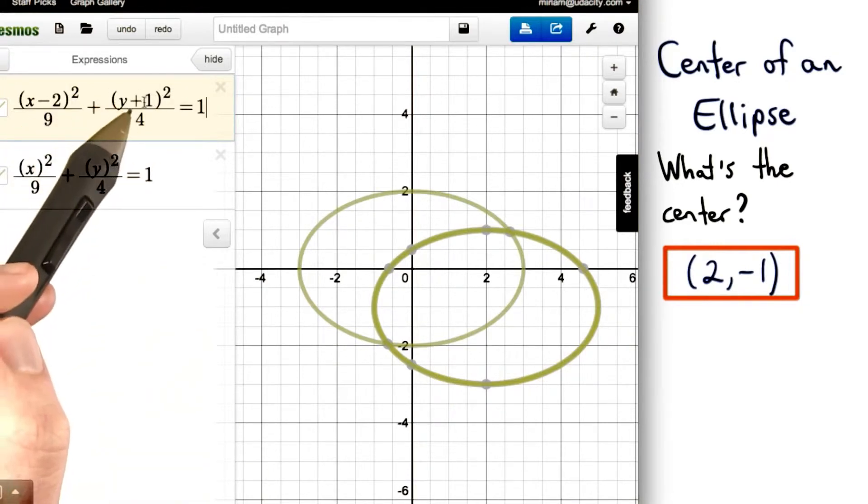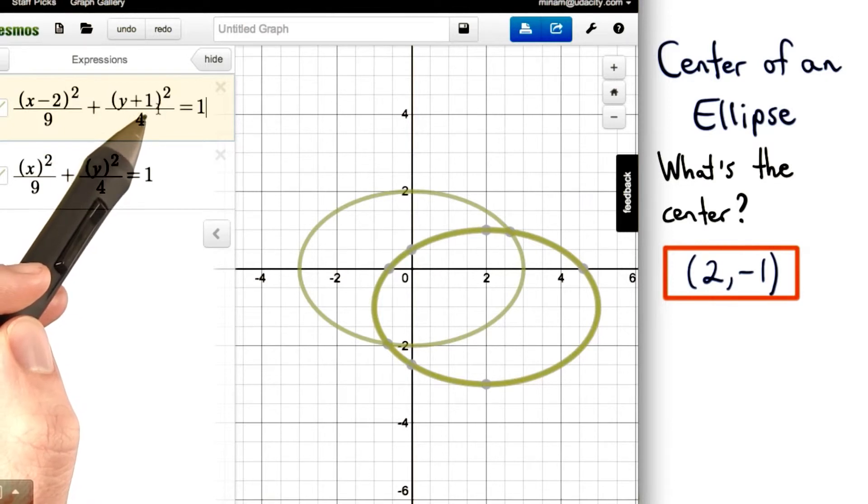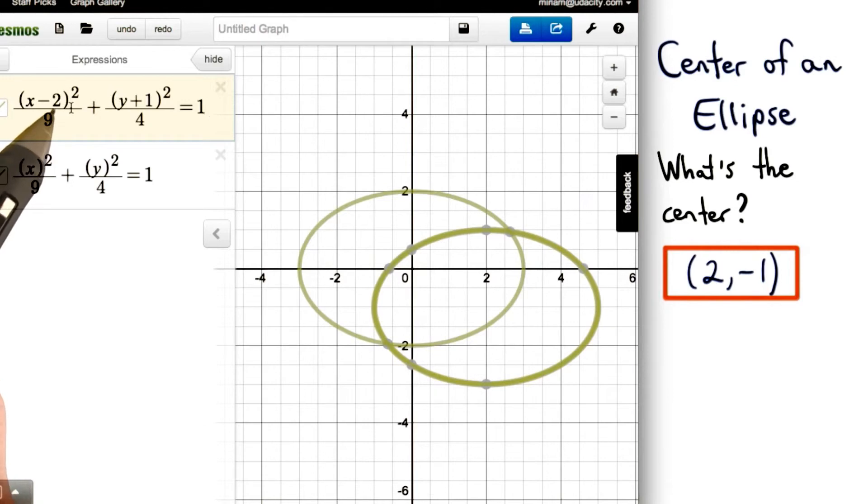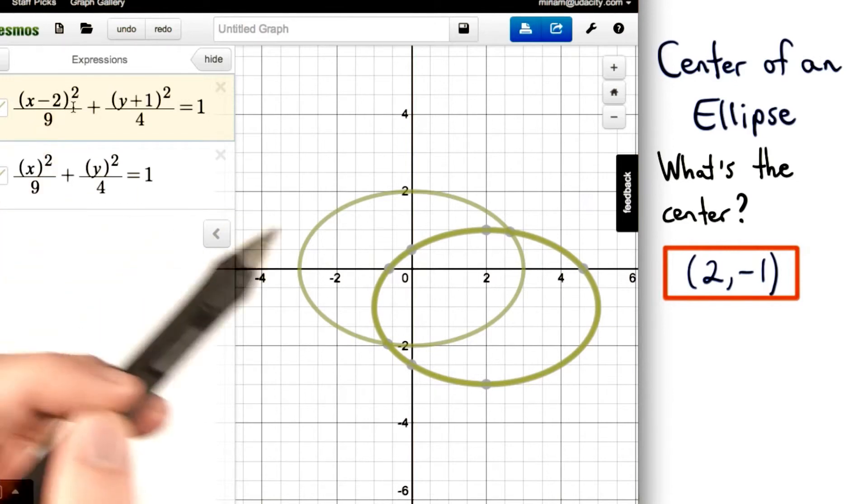Remember that these numbers are the opposite in the direction. So you might think negative 2 would shift our ellipse 2 units to the left. But in fact, it shifts our ellipse 2 units to the right.